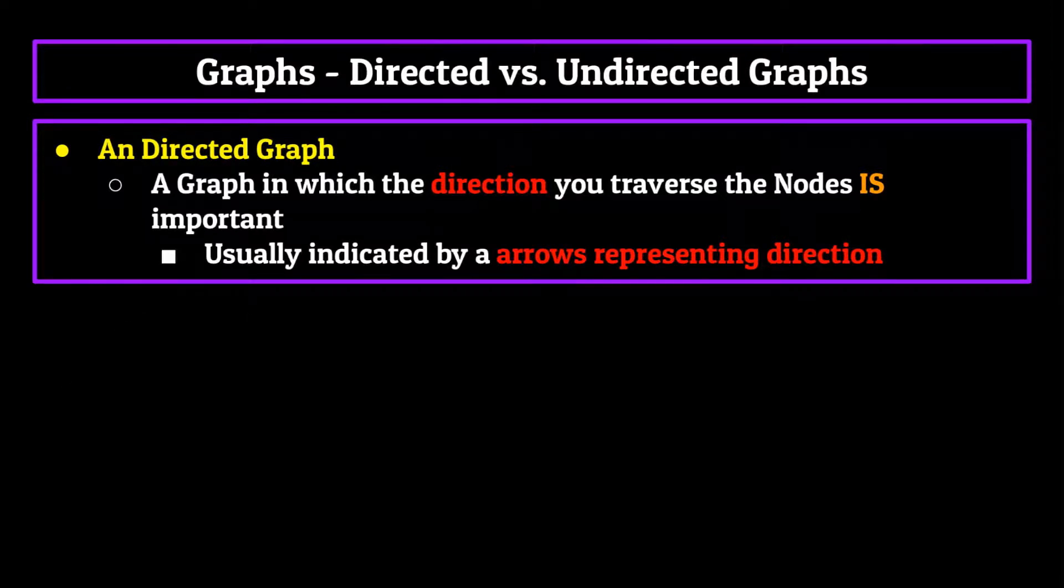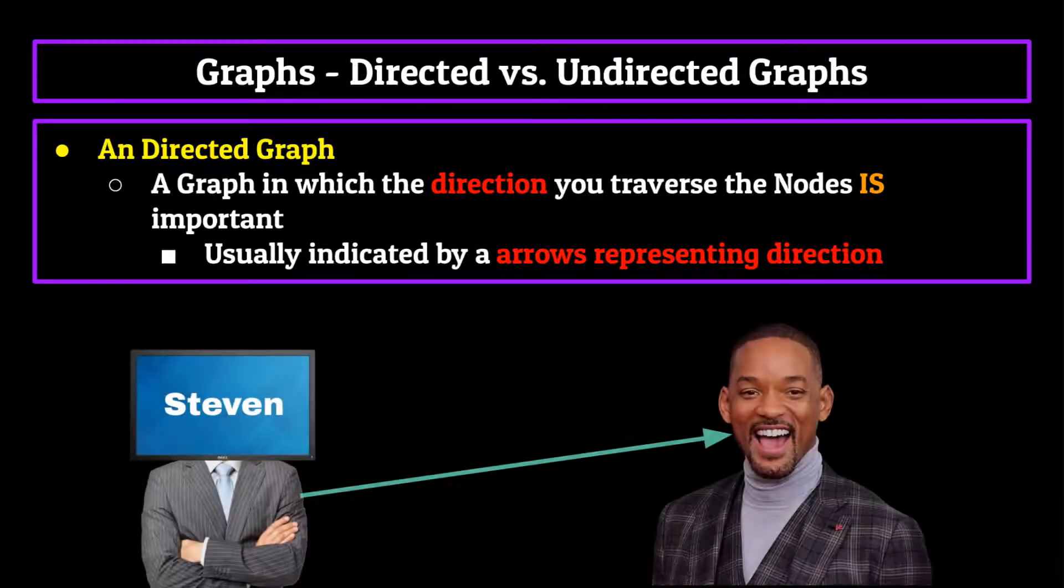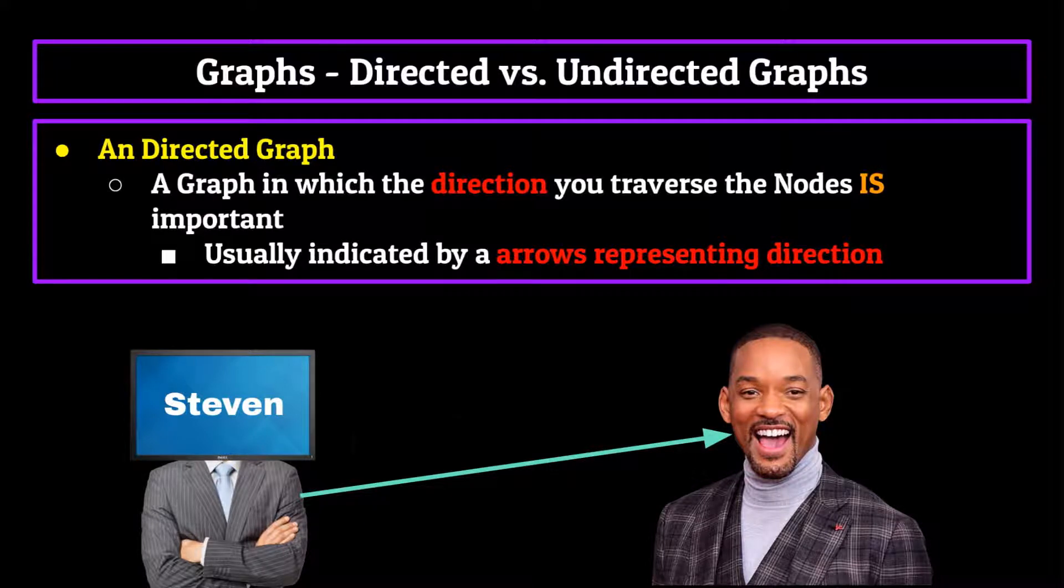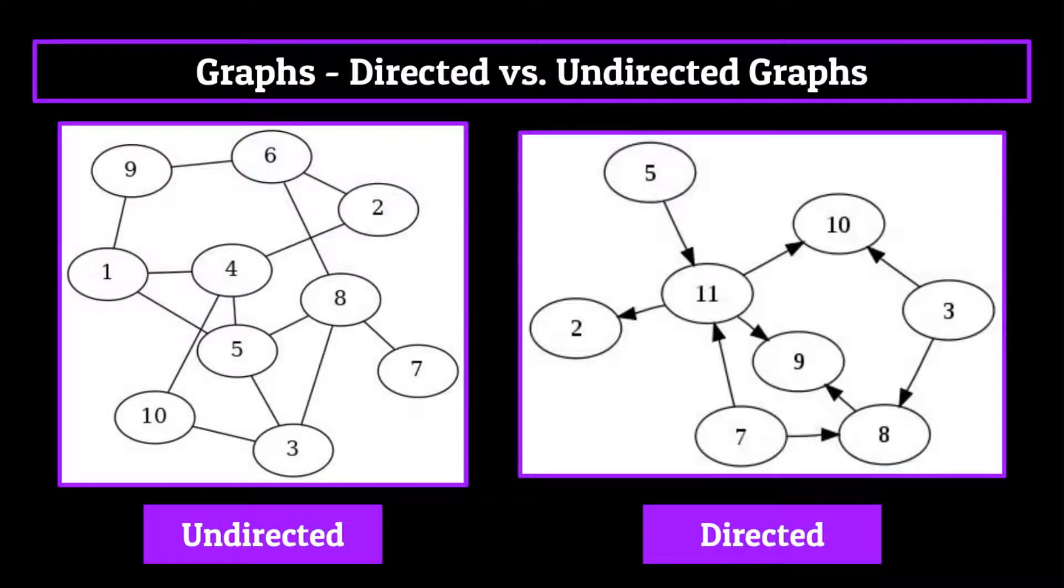A good way to visualize directed graphs is by thinking of them as a network of friends on Instagram. Sure, I can follow famous celebrity Will Smith. But the odds that he follows me back are fairly low. And so in that case, the relationship would only go one way. Undirected and directed graphs both have their uses, as we learned with the social media example. Both provide different functionality, which will be useful to you in your computer science journey, just like the next type of property a graph can have, either cyclic or acyclic.